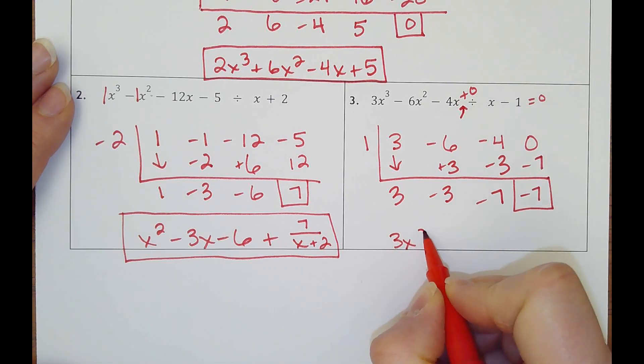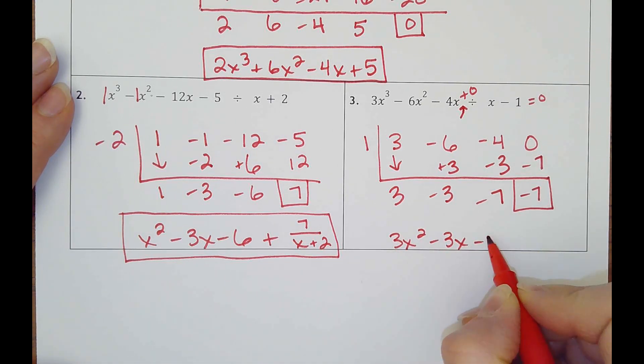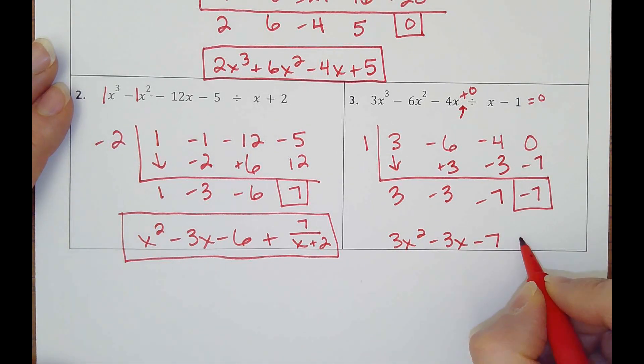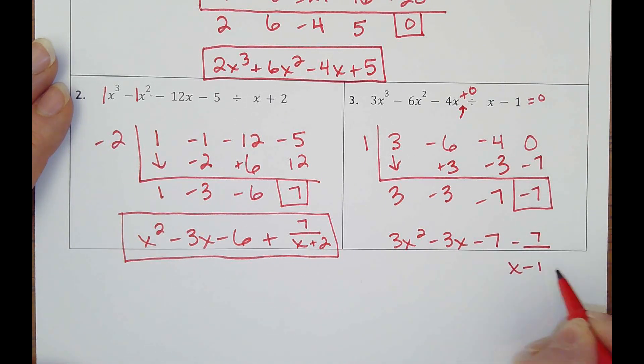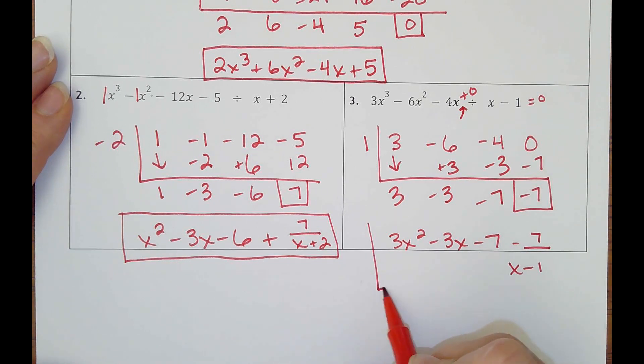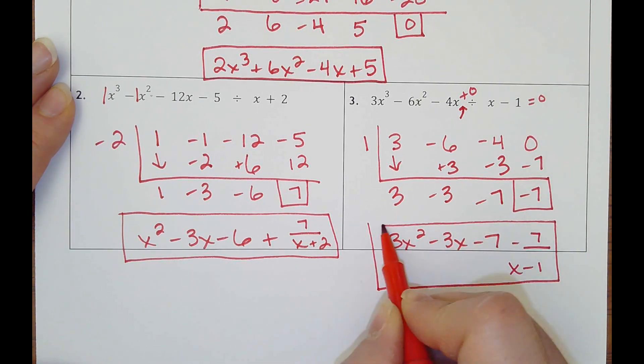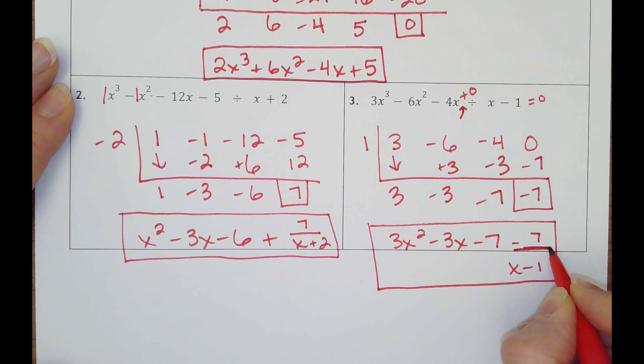Final answer would be 3x squared minus 3x minus 7, and you could put plus negative or just minus 7 over x minus 1. And that's it.